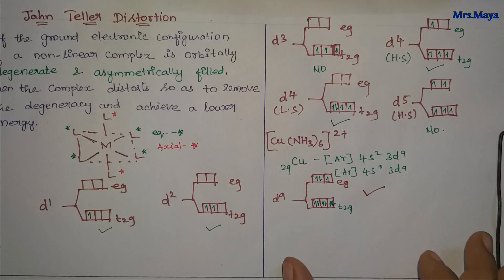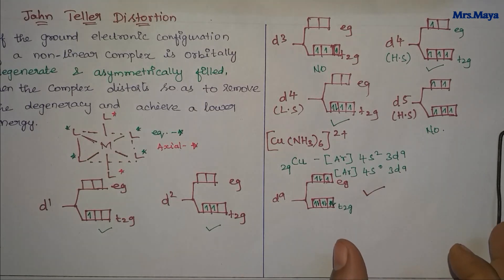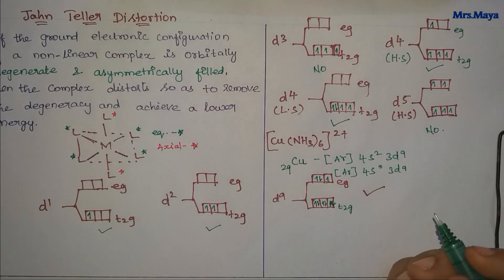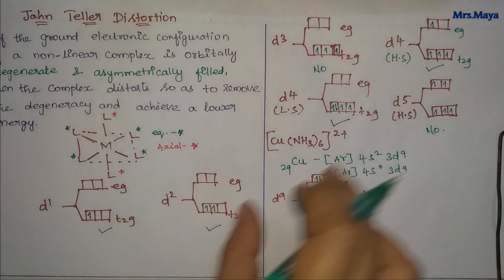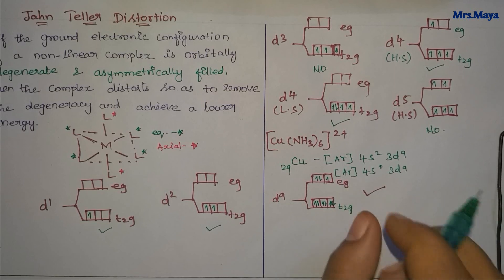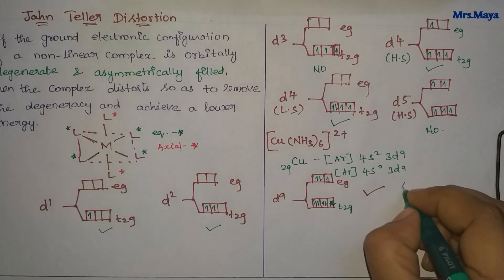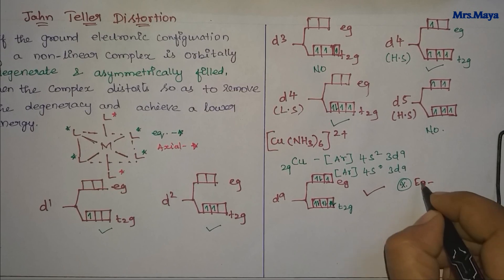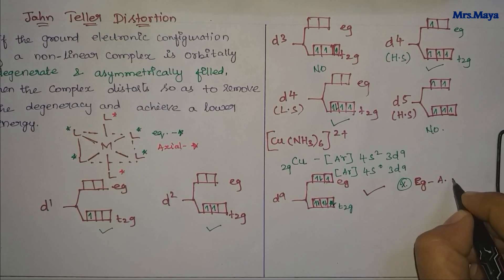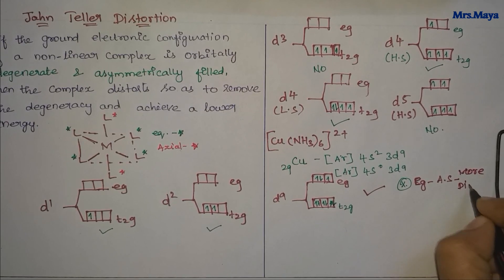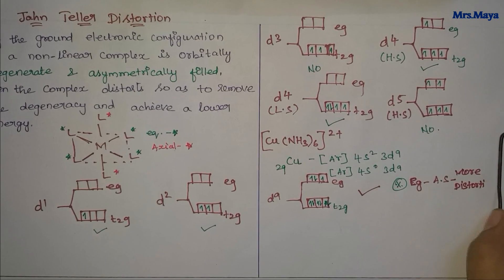So this is the meaning — if you look at a complex, you can predict the distortion. If you look at the asymmetric filling, you can easily predict the distortion. Asymmetric filling in the EG orbitals leads to distortion, and this is very important.